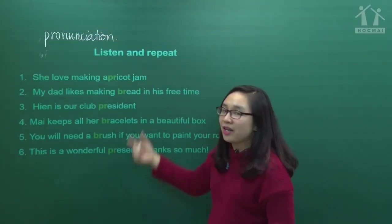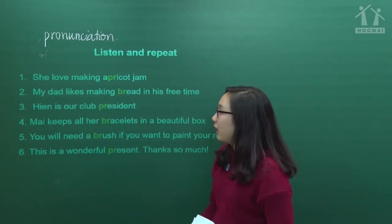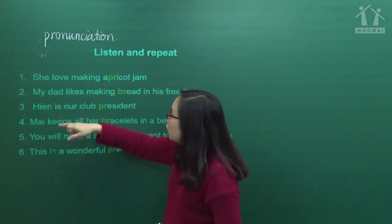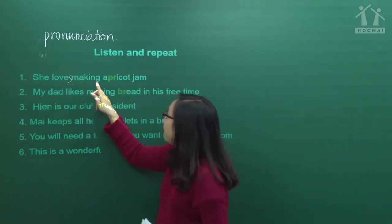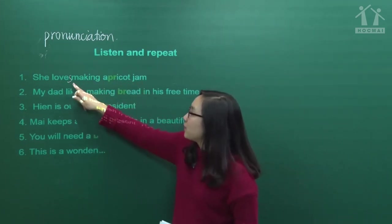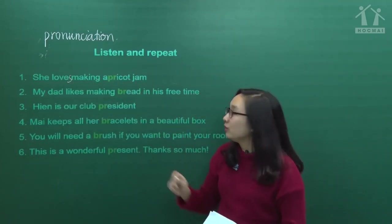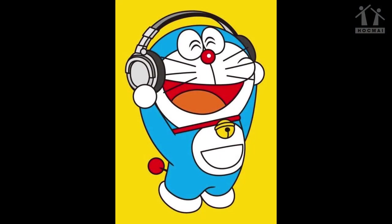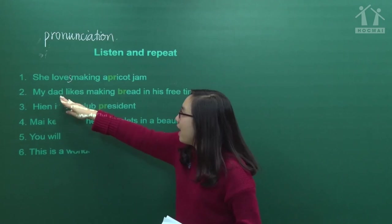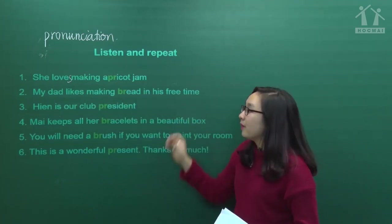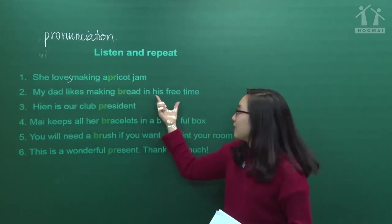Now listen and repeat the sentences. Number 1: 'She loves making apricot jam.' - Cô ấy thích làm mứt mơ. Number 2: 'My dad likes making bread in his free time.' - Bố tôi thích làm bánh mì vào thời gian rảnh rỗi. Number 3: 'Hien is our club president.' - Hiên là chủ tịch câu lạc bộ của chúng ta.